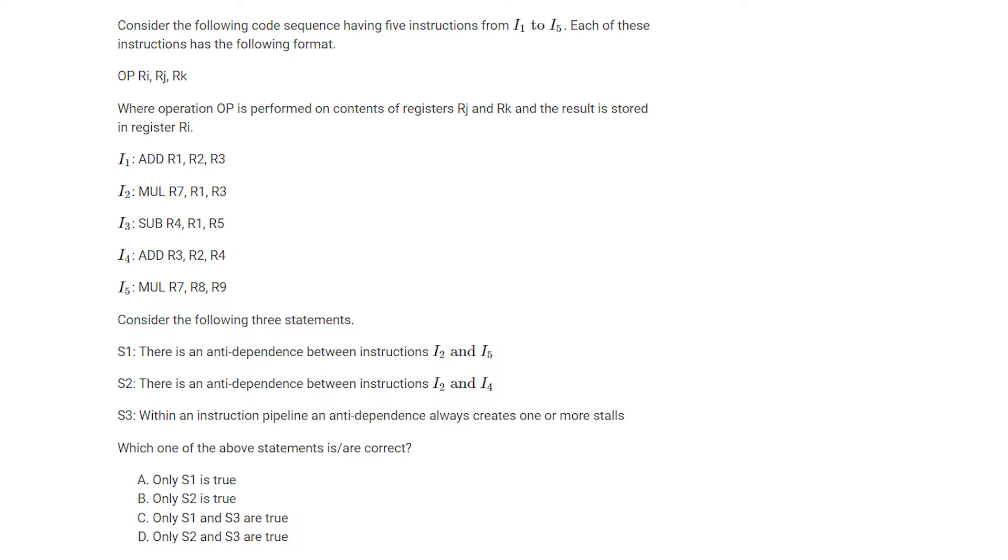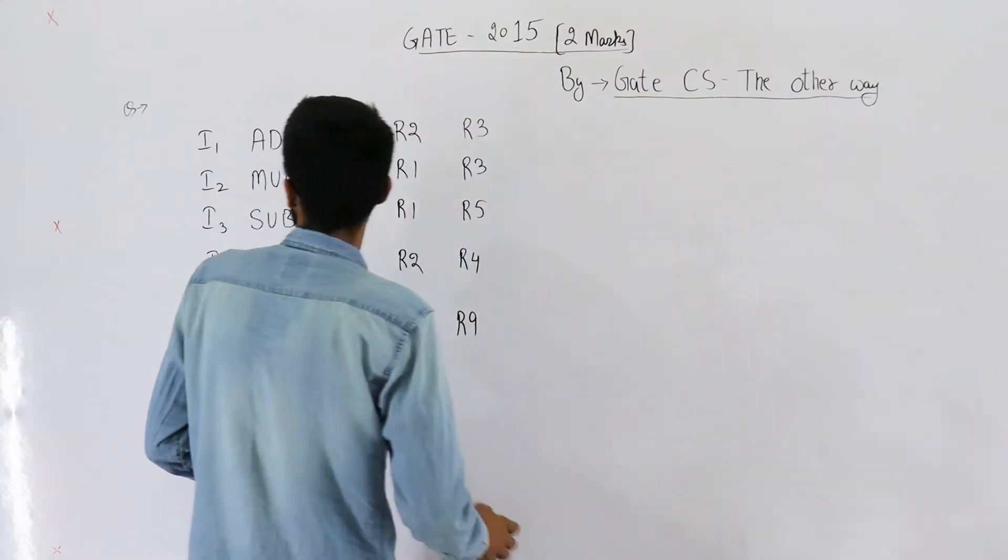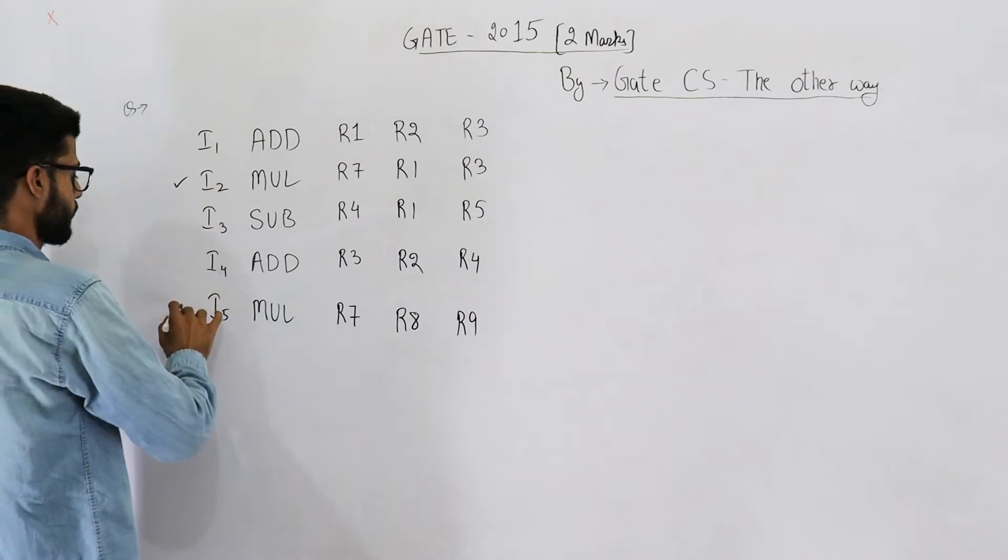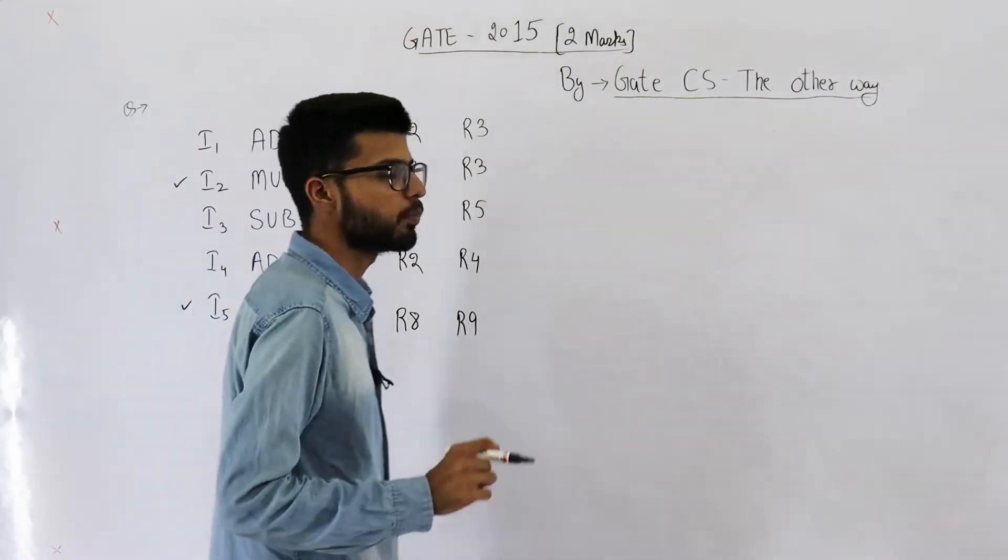So the first statement S1 is there is an anti-dependency between instruction I2 and I5. Instruction I2 and I5. They are saying there's anti-dependency between these two. Point number one.